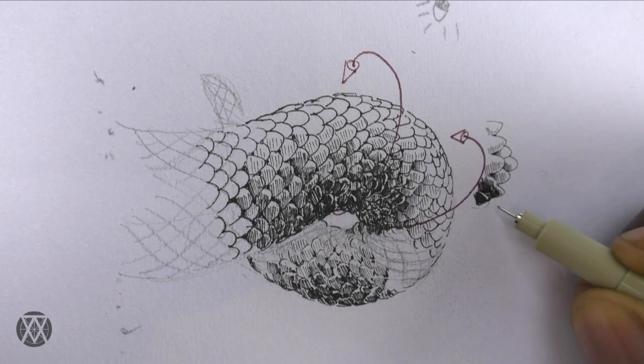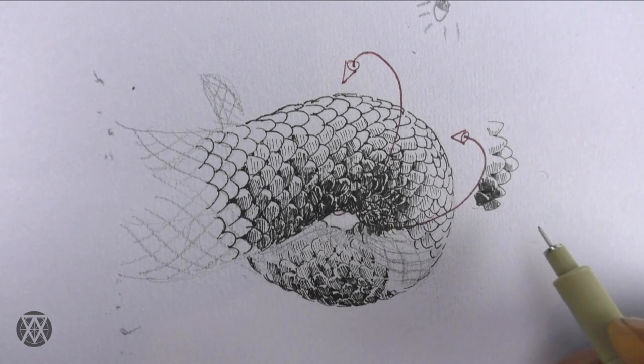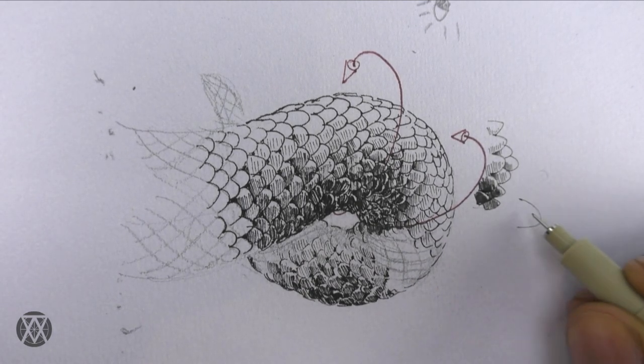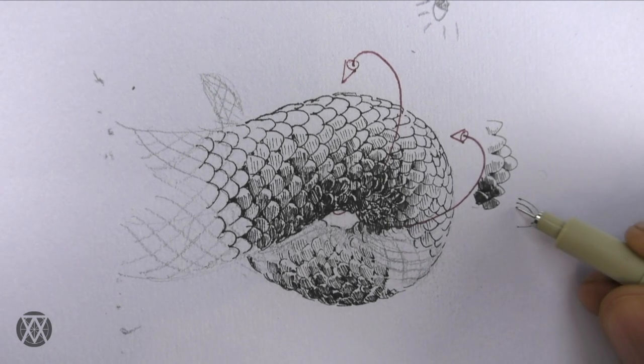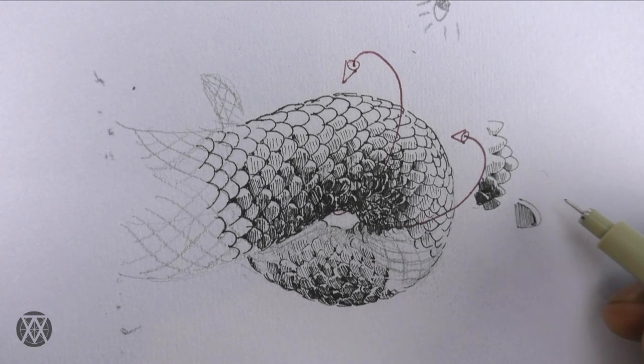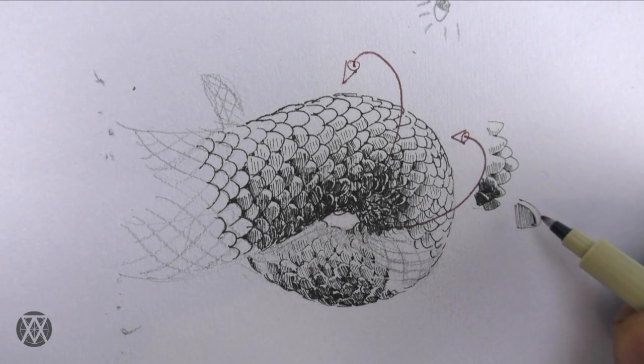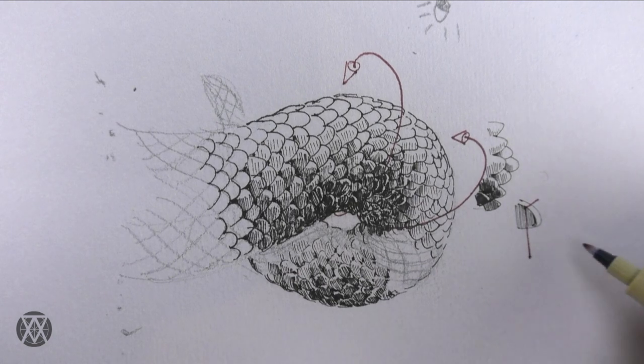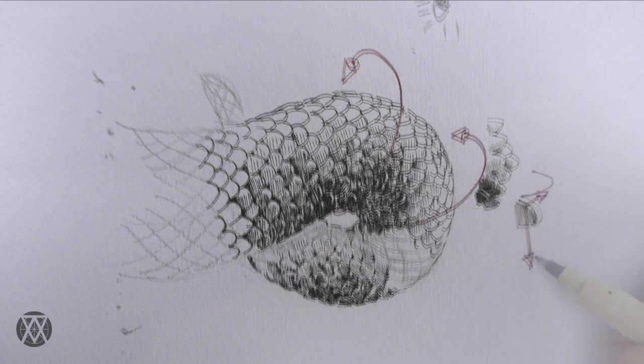You're trying to make sure that in the shadow areas, each scale is mostly covered. I just leave this little area, a little edge. What that does is it helps to give each scale a sense of depth. It's almost like you're imagining a line that moves like this.